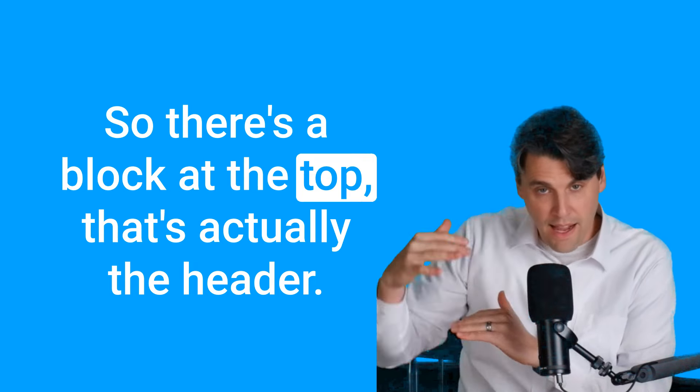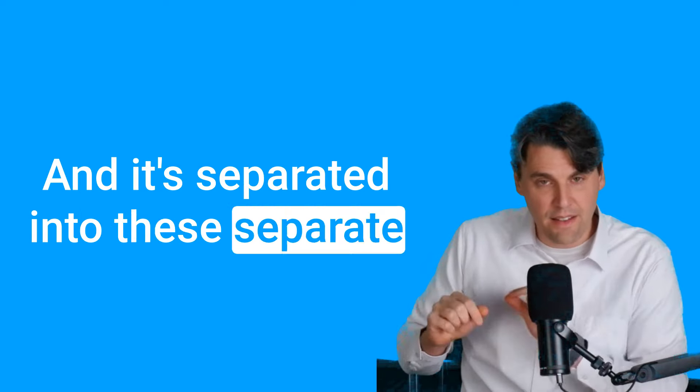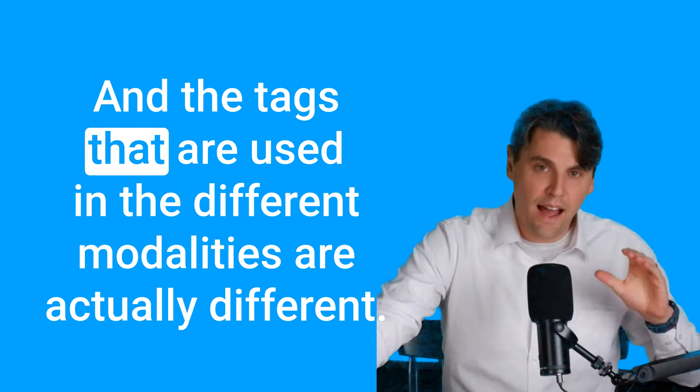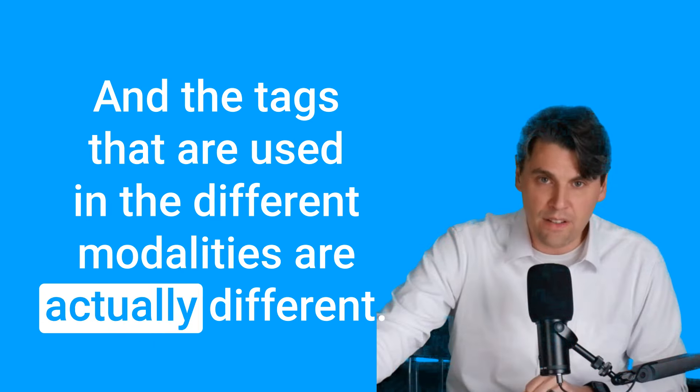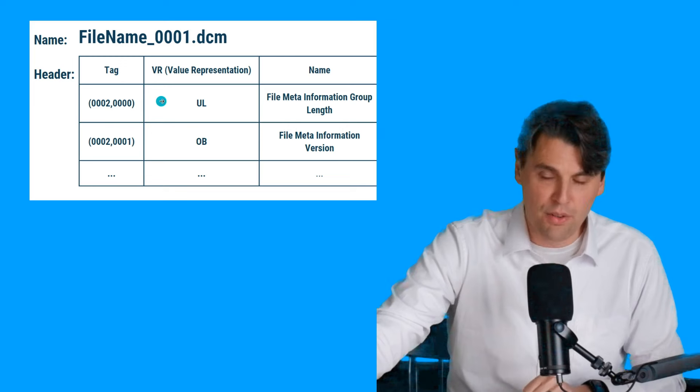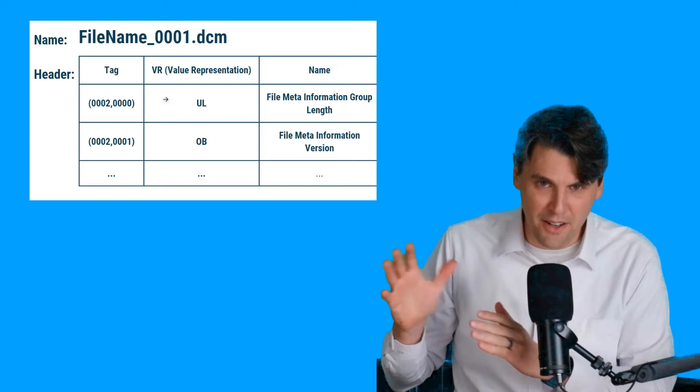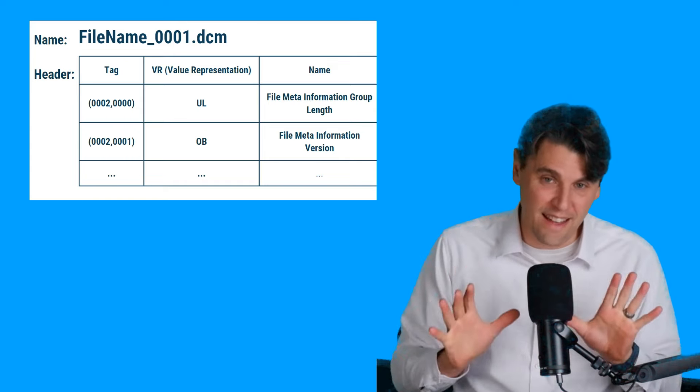So there's a block at the top that's actually the header, and it's separated into these separate things that are called tags. And the tags that are used in the different modalities are actually different. The tags are defined here, and these are defined in hexadecimal numbers. So if you actually open it up, and the numbers look kind of funny because they have letters in them too, that's what's called hexadecimal numbers.